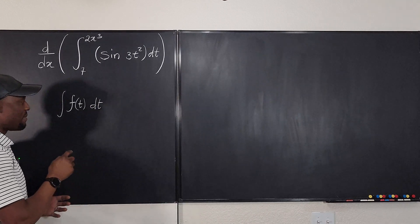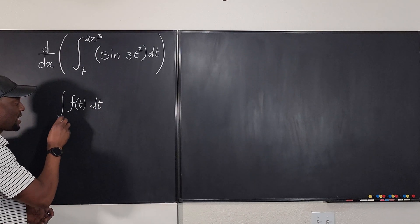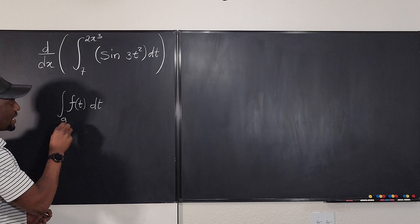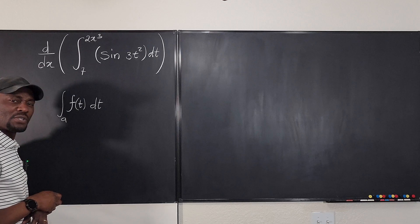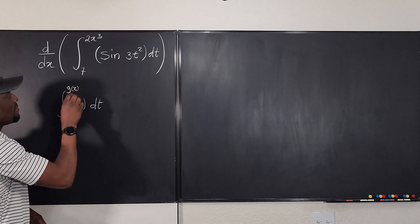...and then you have a boundary where the lower boundary is a constant, let's call it a, and the upper boundary is a function of x. I'm gonna call that function of x, say g of x.